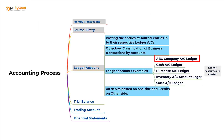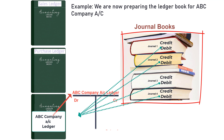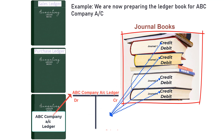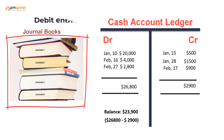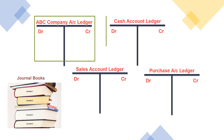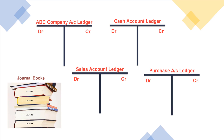Let's say we have an account called ABC Company account. We look for the debit entries for ABC Company in all the journal books and write all the debit entries on the left side. We also look for all the credit entries for ABC Company in the journal books and write them on the right side. Once we are done with this account we move on to another account — for example, the cash account ledger. We search for cash account entries in all the journal books, list out all the debit entries on the left side and all the credit entries on the right side. We repeat this process until all the accounts listed in the journal entries are completed.